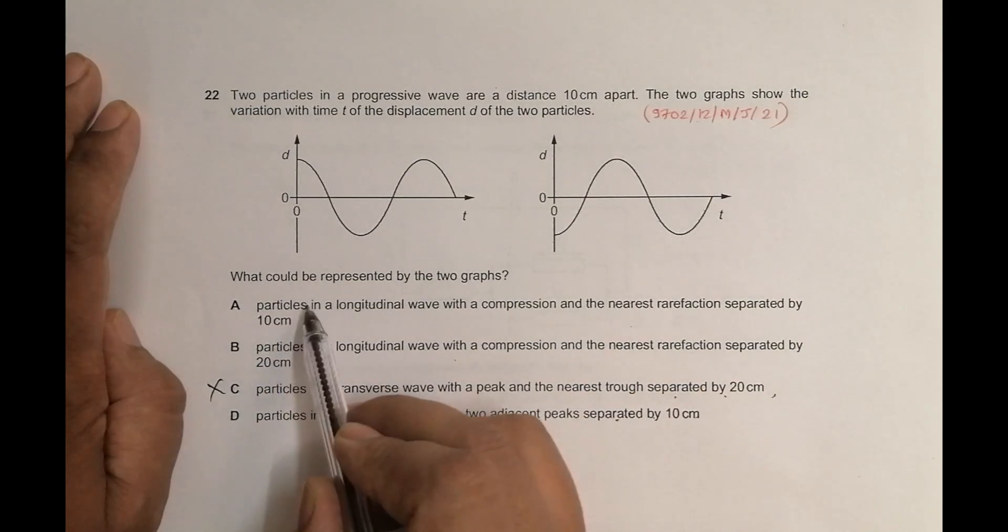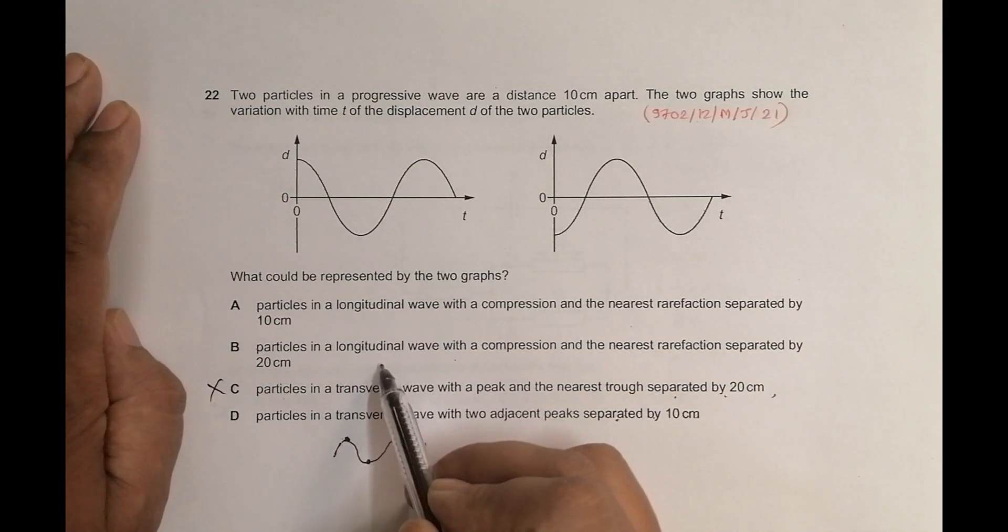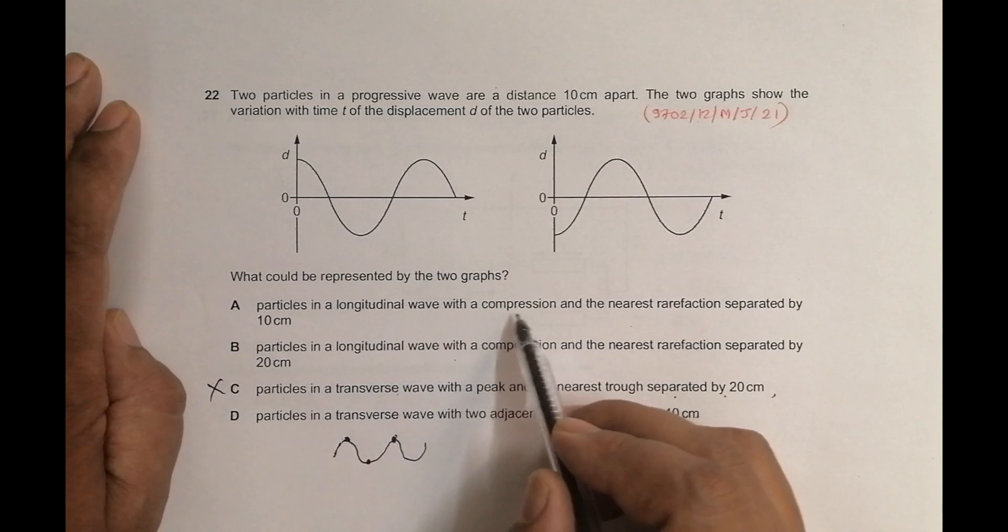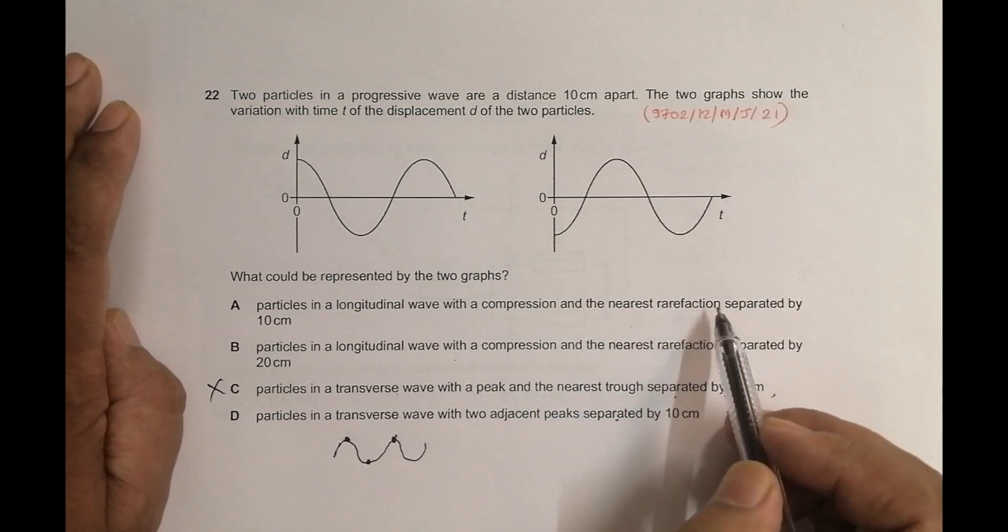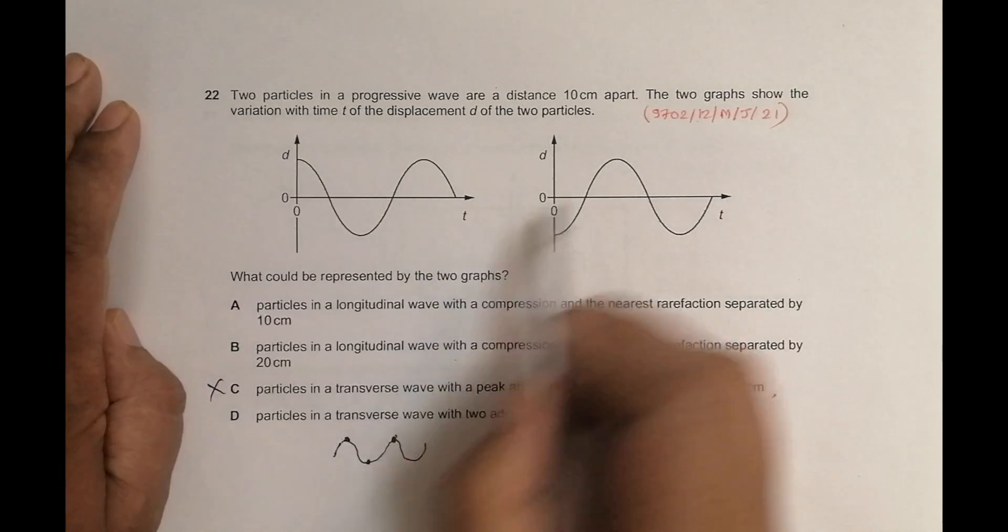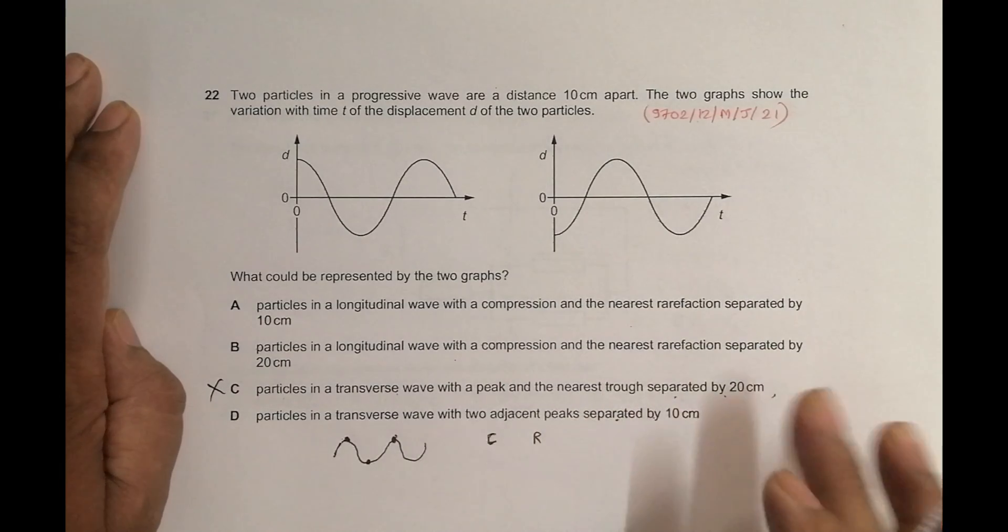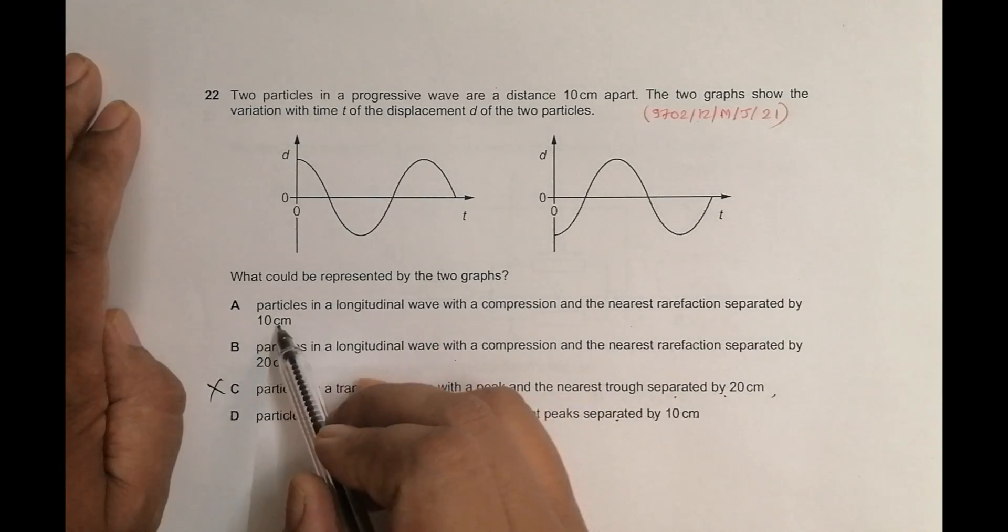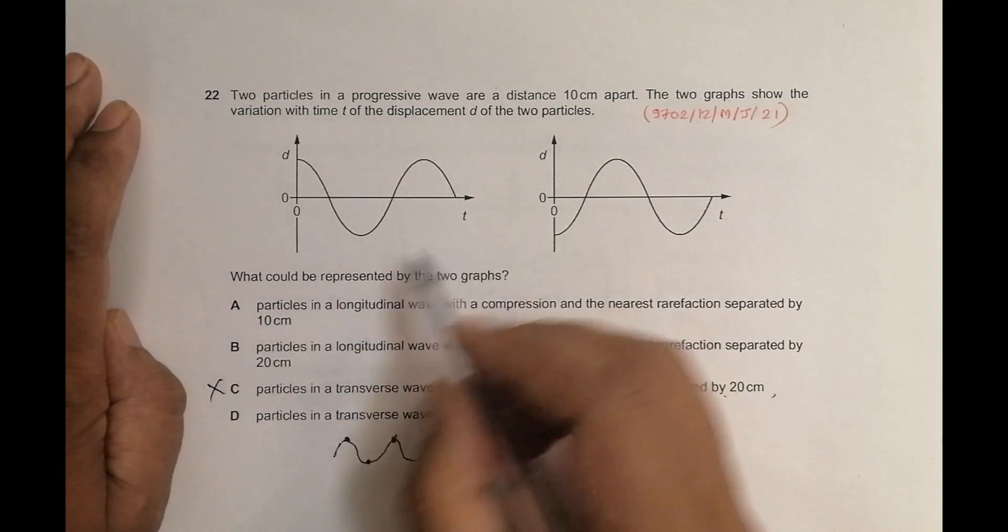Now, in number A and B, we have got longitudinal waves. And the first one reads, with a compression and the nearest rarefaction. So here, compression and rarefactions are those regions where the particles are performing exactly opposite movements. So opposite movements like this. Compression and rarefaction, it's okay. And separated by 10 centimeter. Yes, so this is the correct choice.